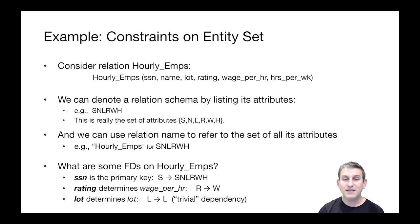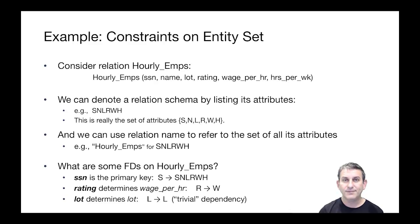What are some functional dependencies on hourly_emps? Let's say that S (social security number) is the primary key — so S determines everything, all attributes. The rating determines the wage per hour: R determines W. If you're rating 4, that means you have a particular salary; rating 5 means a different salary. And then L determines L — that's a trivial dependency, always true for any attribute that it determines itself. We don't have to state trivial dependencies; R determines R and S determines S are given.